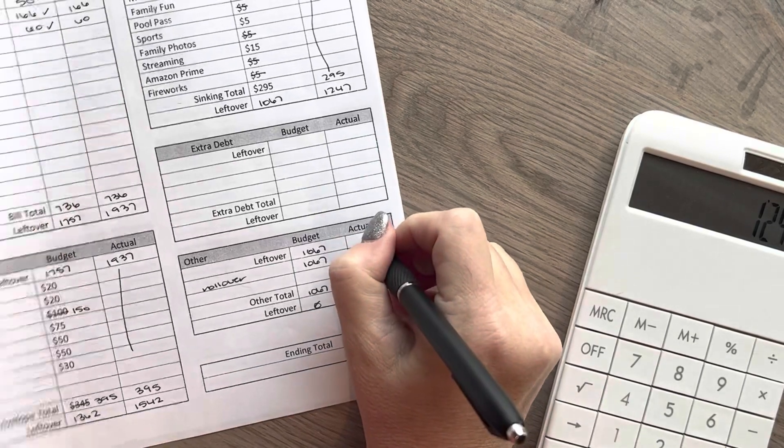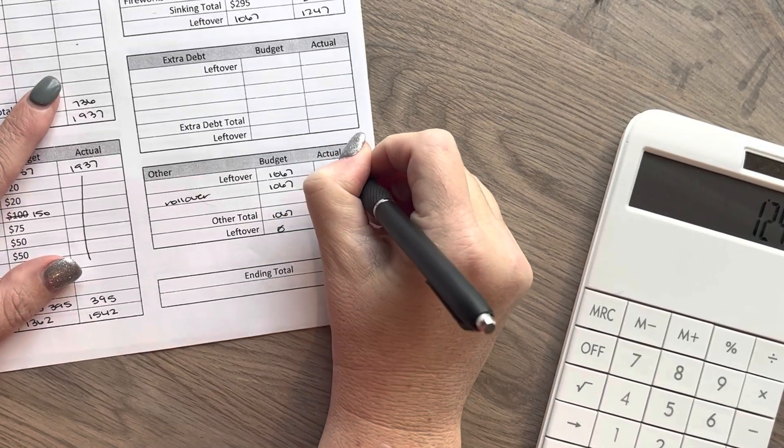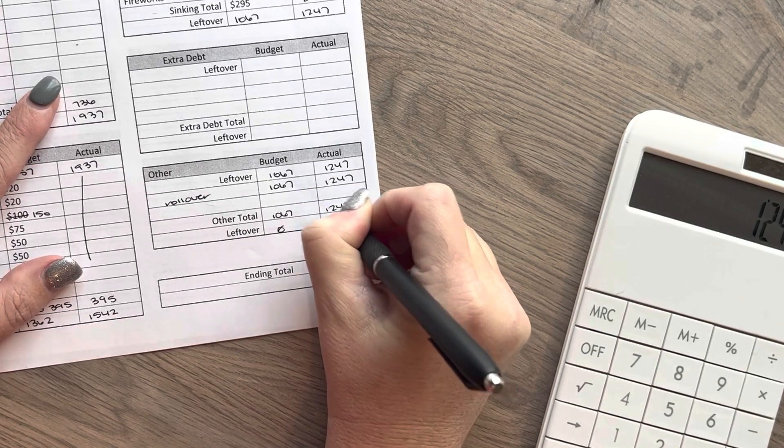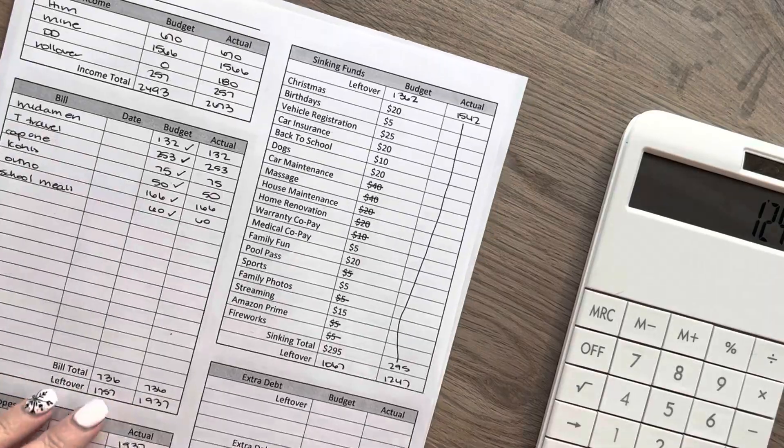And then we will roll over the $1247 for this coming week, which left us as a zero-based budget, which is what we want to do.